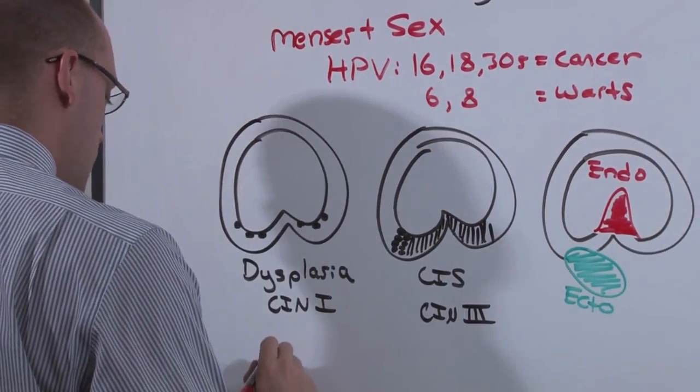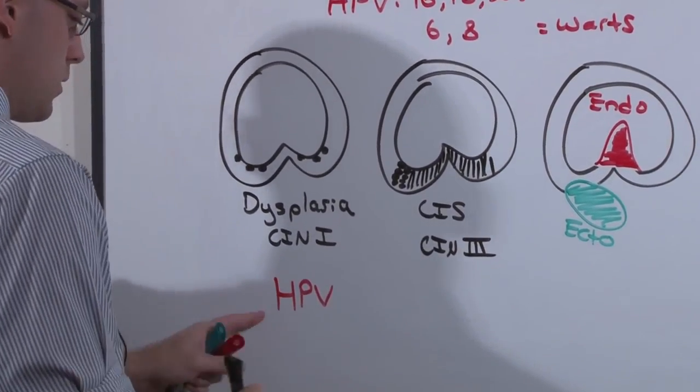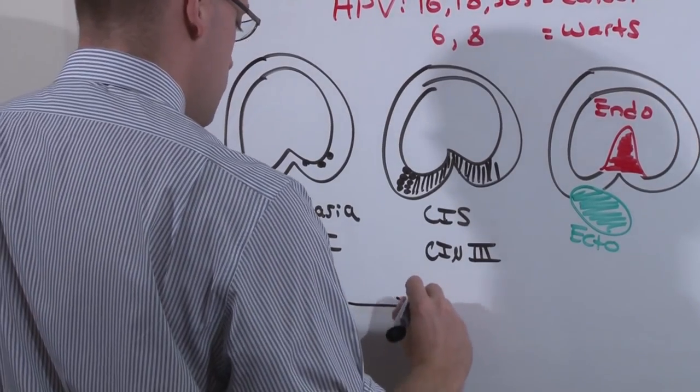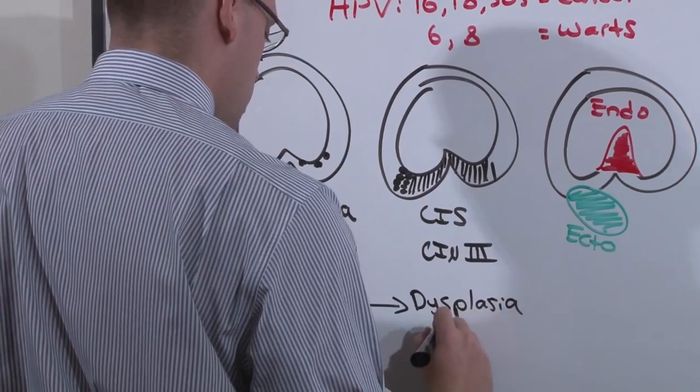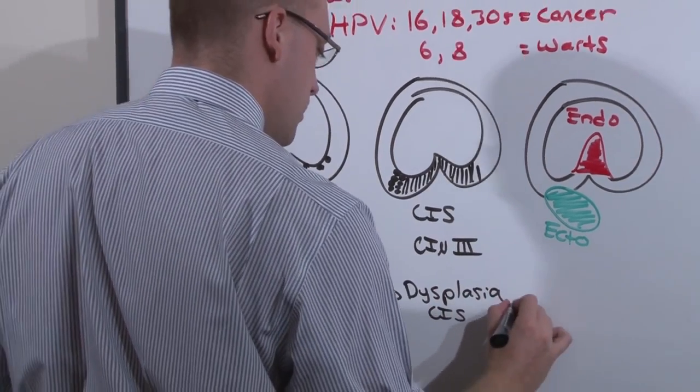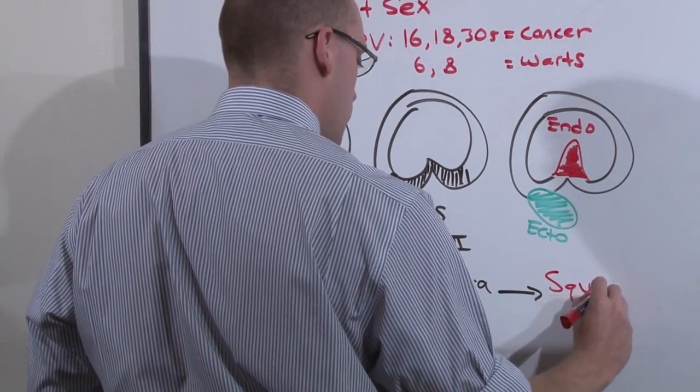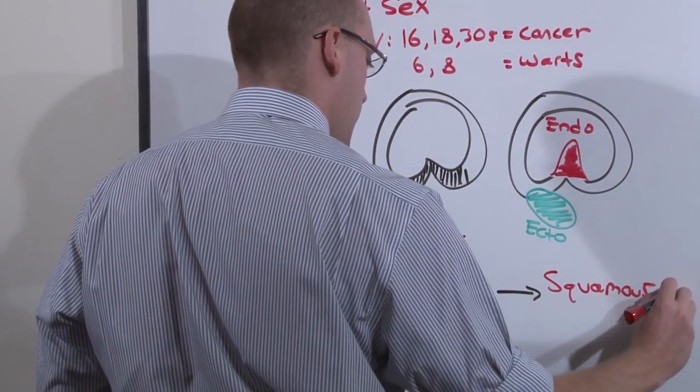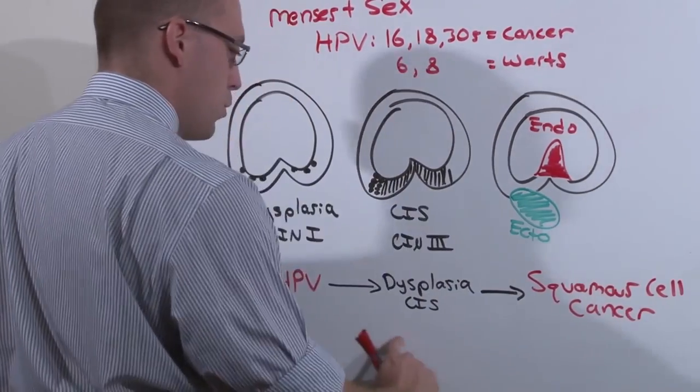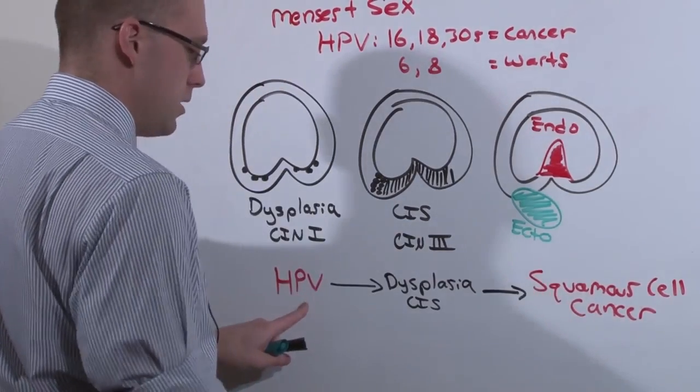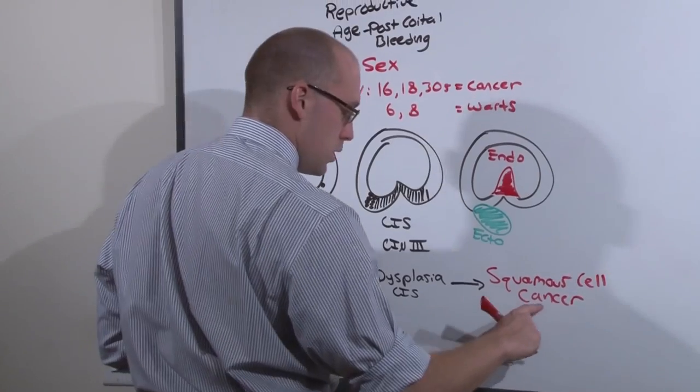A female gets infected with HPV, that's her risk factor. It turns into dysplasia and carcinoma in situ, and then progresses to full-blown squamous cell carcinoma. This takes a number of years to occur, because you have to be infected, undergo inflammation, to dysplasia, and then eventually to cancer.